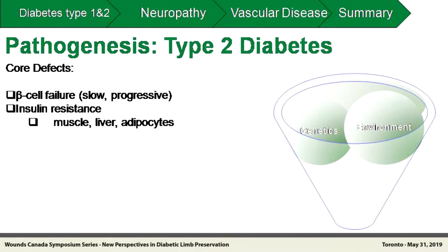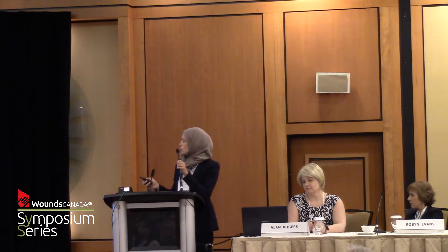In type 2 diabetes, we also see beta cell destruction and dysfunction, but through different mechanisms. There's a bigger genetic component, as well as environmental and behavioral etiologies. The key additional feature is insulin resistance. In the 1980s, it was thought that hyperglycemia explained everything and treatments were targeted to that, but we realized we didn't have the full picture. Ralph DeFronzo radically changed how we approach type 2 diabetes.